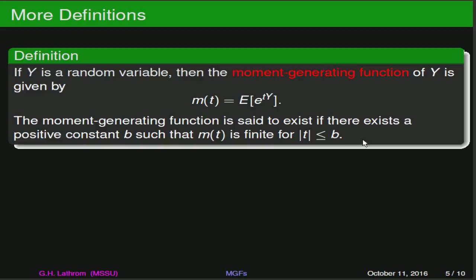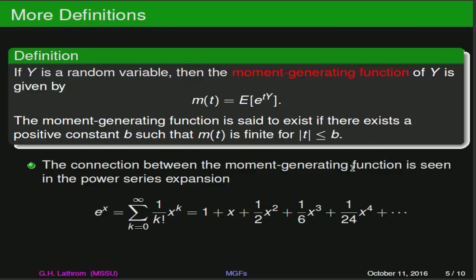This should remind you of going back to Calculus 2, where you were talking about series expansions of functions. If we look at the connection between the moment-generating function and the power series expansion of e to the x, that e to the x equals the sum from 0 to infinity of 1 over k factorial times x to the k.